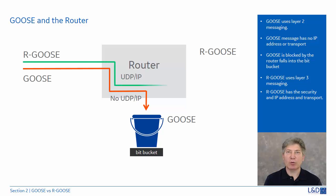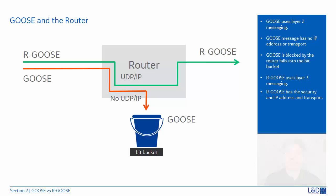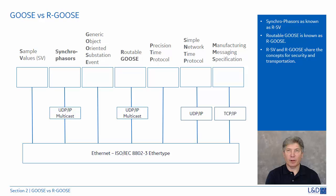The Rgoose is a multicast Layer 3 messaging service designed for use in a wide area network environment. It has UDP and IP headers assigned to it, which allows the Rgoose message to pass through the router's firewall. Here we have a list of protocols available: Sample Values (SV), Synchrophasors — now known as Routable Sample Values (RSV), the GOOSE message, the Routable GOOSE (Rgoose), PTP Precision Time Protocol and IEEE 1588, SNTP Simple Network Time Protocol, and MMS Manufacturing Messaging Specification. The only difference between the GOOSE and the Rgoose is the UDP/IP header. The guidelines for synchrophasors regarding security and transportation have been adapted to the Routable GOOSE. In the next section, we'll take a look at how we secure the Rgoose.